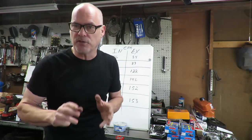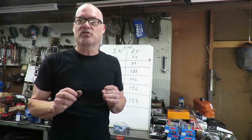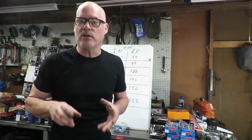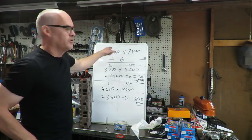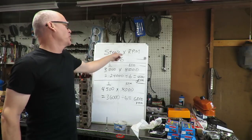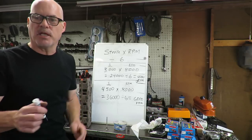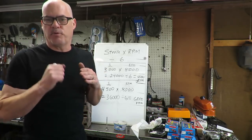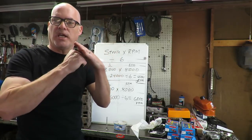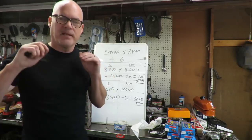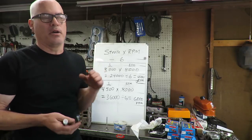There's a really simple formula for figuring out piston speed, and I want to give it to you so you can make educated guesses about camshaft selection. The formula is: stroke multiplied by RPM, divided by six — that gives you average piston speed in feet per minute. The piston doesn't travel the same speed all the way up and down the bore — it depends on rod ratio, stroke length, and rod length. Longer rods and shorter rods change where the piston accelerates and slows down in the bore.